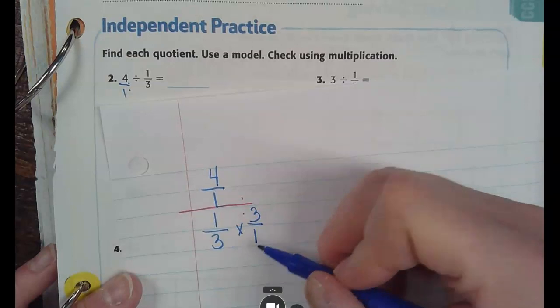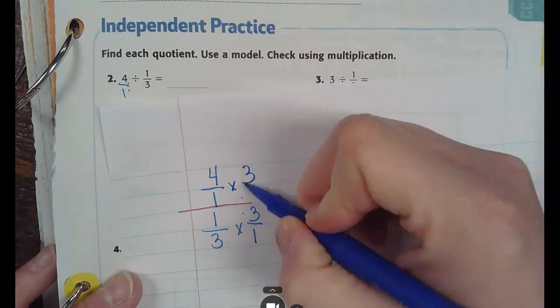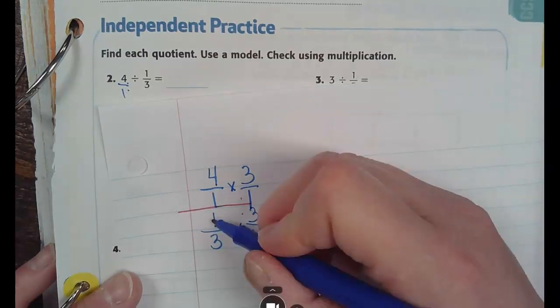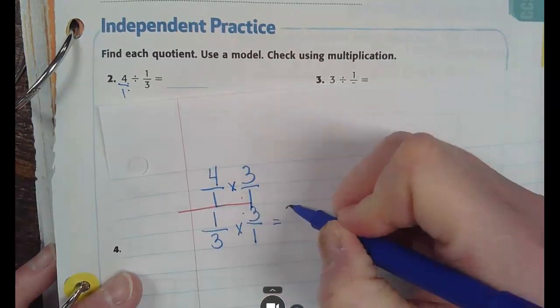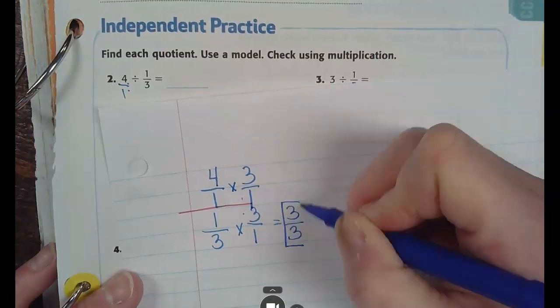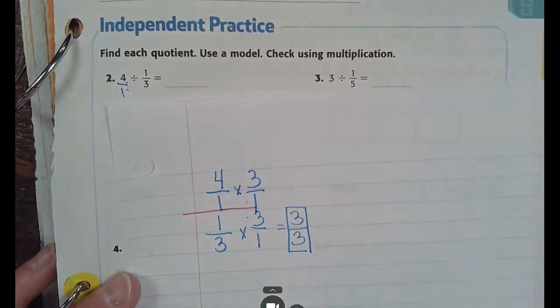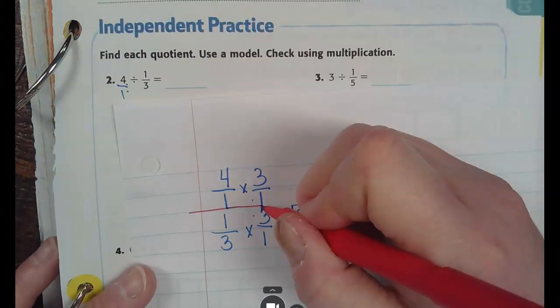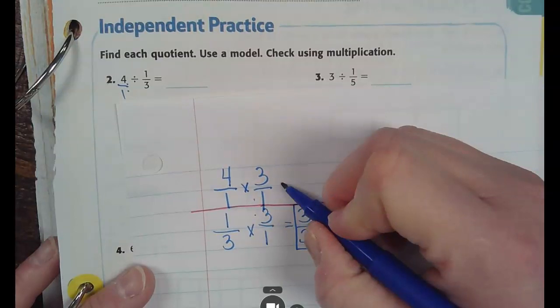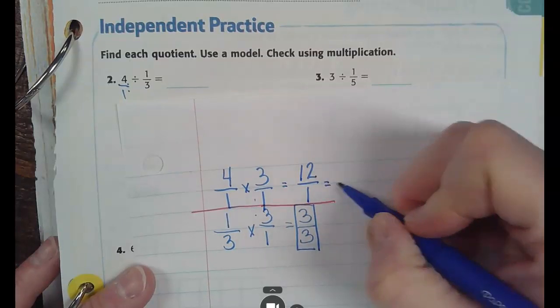Whatever I do to the bottom, I must also do to the top. 3 over 1. So, 1 times 3 is 3. 3 times 1 is 3. 3 over 3 is 1 whole. Does that do anything now? No. It's basically the same as dividing it by 1, right? Now, I have 4 times 3 at the top. 4 times 3 is 12. 1 times 1 is 1. 12 over 1 is 12 whole.